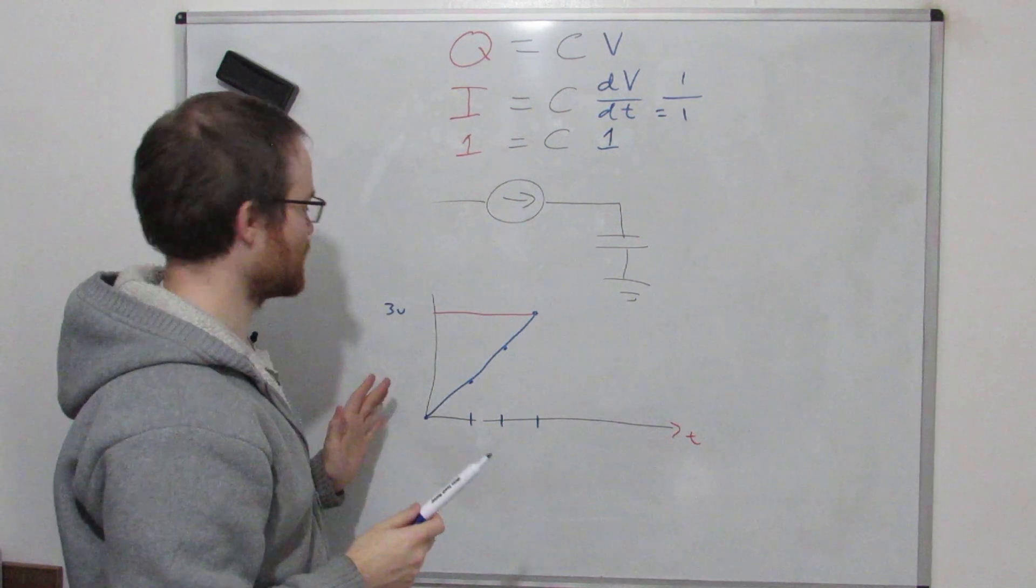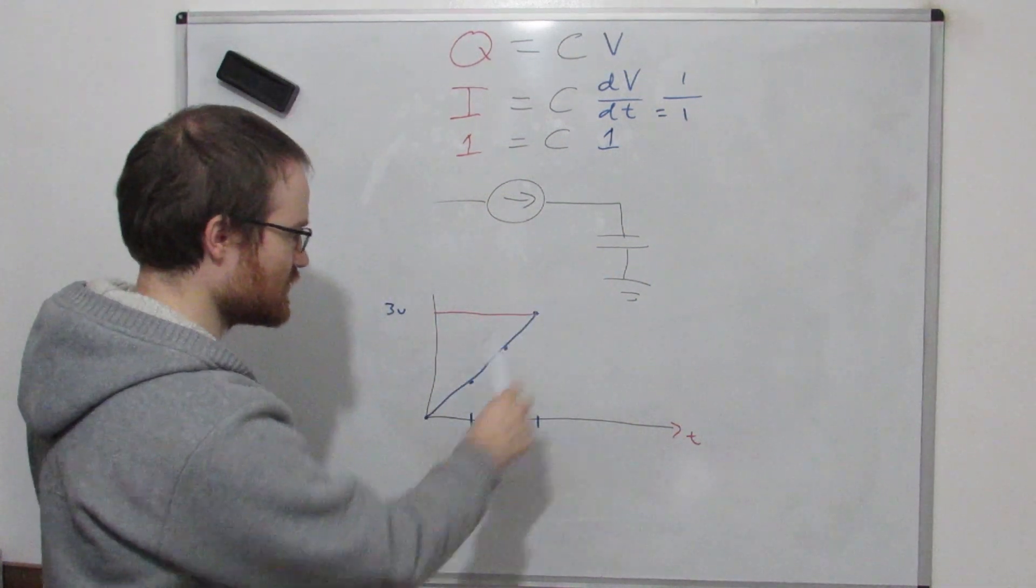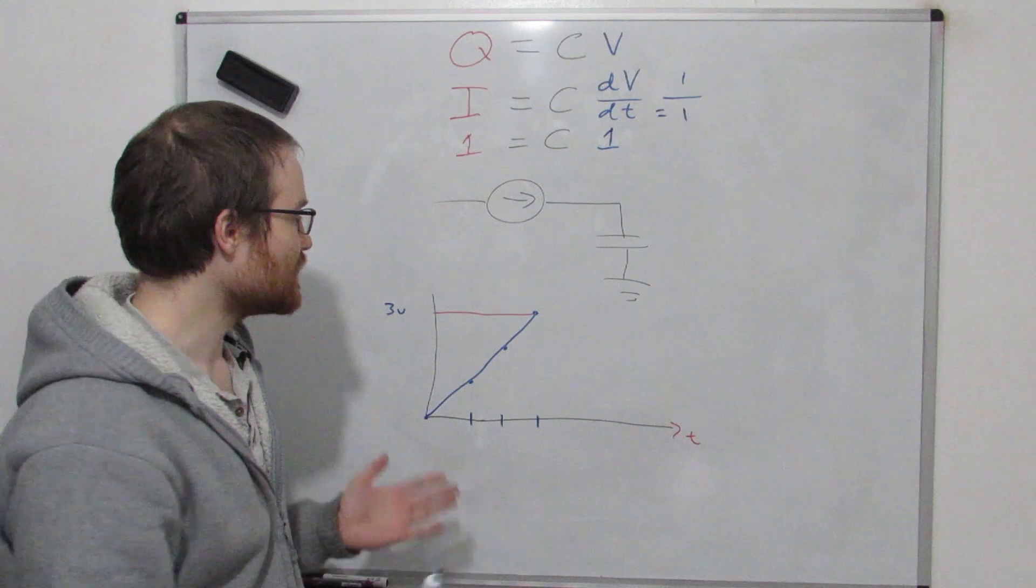That's kind of interesting. The takeaway from this, a constant current applied to a capacitor will give you a straight line. That's kind of cool. We call this a ramp.